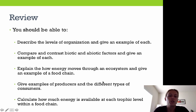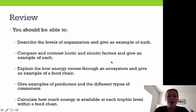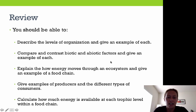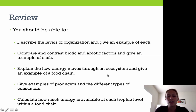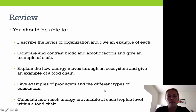From this lesson, you should be able to describe the levels of organization from largest to smallest and give an example of each, compare and contrast biotic and abiotic factors, explain how energy moves through an ecosystem and give an example of a food chain, give examples of producers and the different types of consumers, and calculate how much energy is available at each trophic level within a food chain.